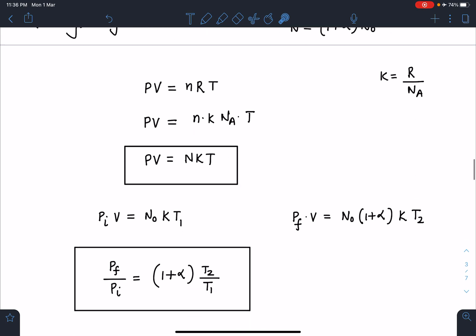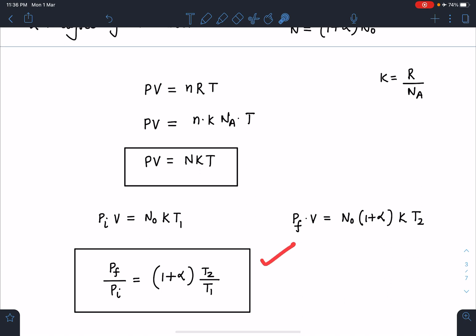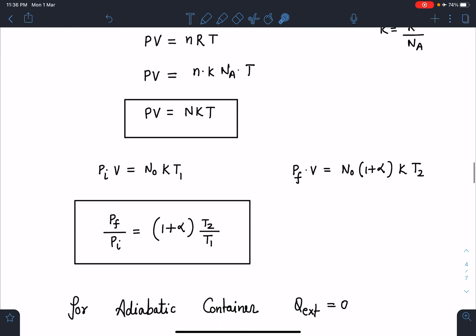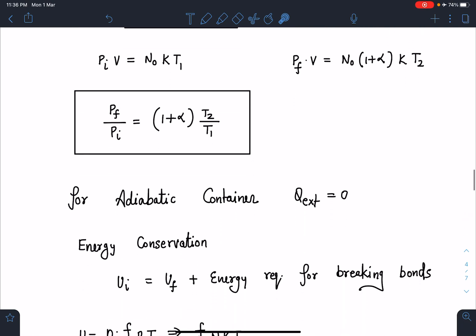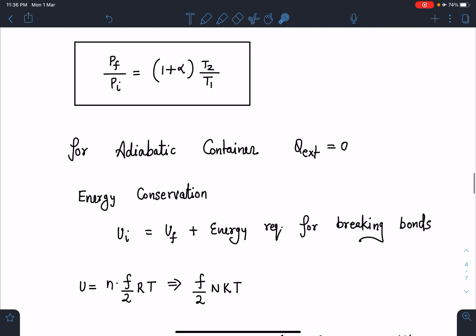So here you can see if I divide these two equations I am going to get P_final/P_initial = (1+α)T₂/T₁. T₂ and T₁ are given, α is unknown, so with the given data somehow I have to find out the value of this α and if I substitute I will be getting the answer for my question.